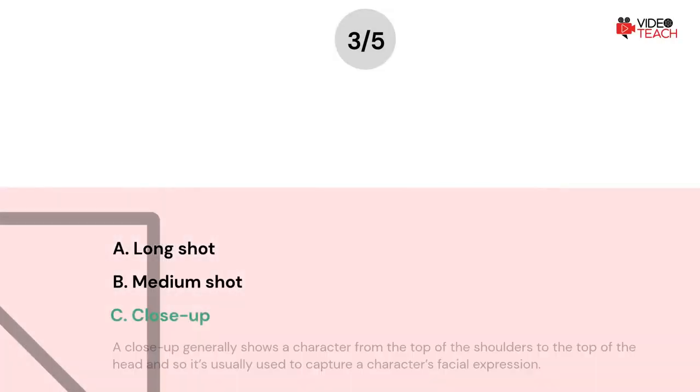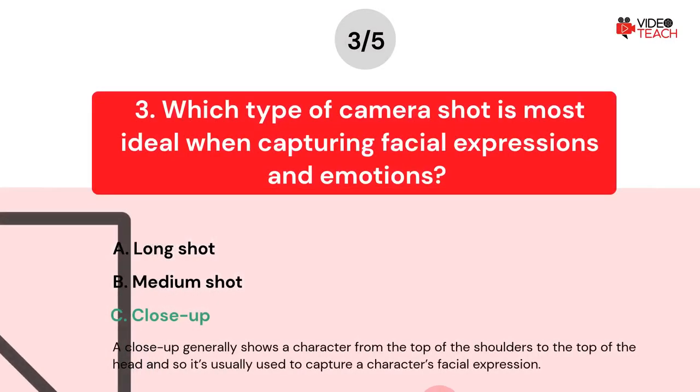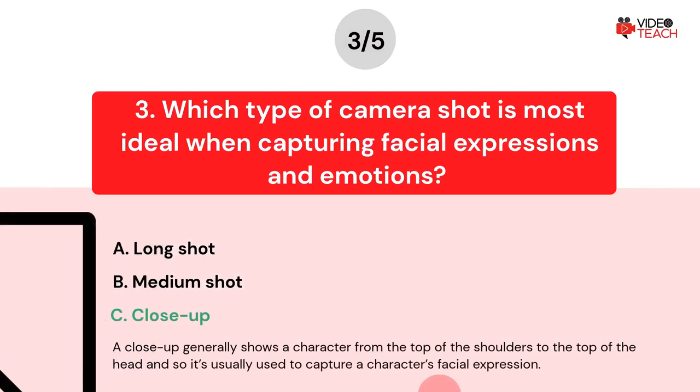The correct answer is C. A close up generally shows a character from the top of the shoulders to the top of the head, and so it's usually used to capture a character's facial expression.